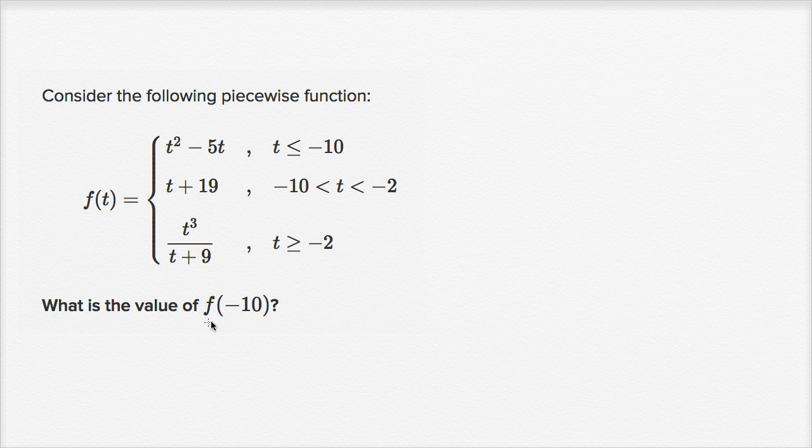And then they ask us, what is the value of f(-10)? So t is going to be equal to -10. So which case do we use? Let's see, if t is less than or equal to -10, we use this top case right over here. And t is equal to -10. That's the one we're trying to evaluate. So we want to use this case right over here.